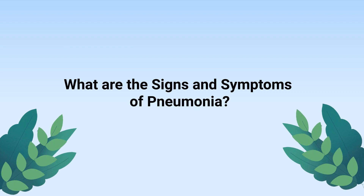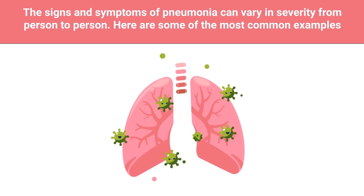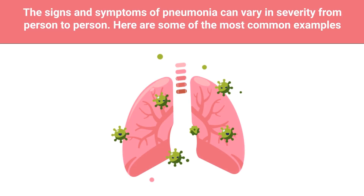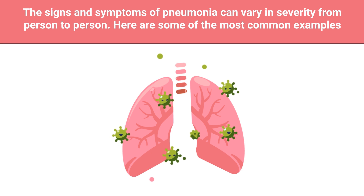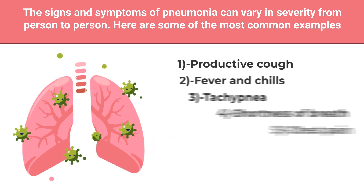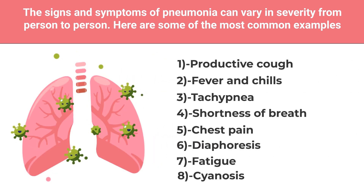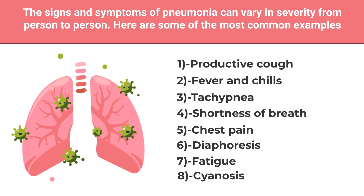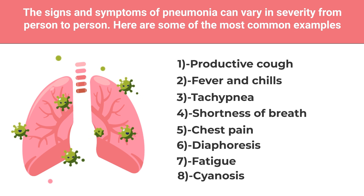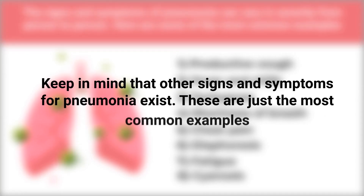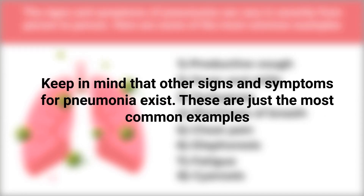The signs and symptoms of pneumonia can vary in severity from person to person. Some of the most common examples include productive cough, fever and chills, tachypnea, shortness of breath, chest pain, diaphoresis, fatigue, and cyanosis. Keep in mind there are other signs and symptoms — these are just the most common examples.